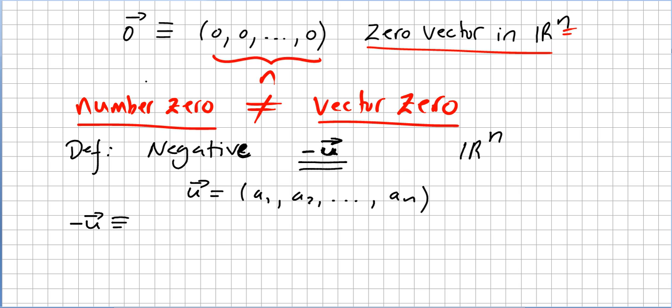It's defined, I'm using again this notation, it's defined as (-a_1, -a_2, etc., -a_n). So this will be the negative vector.